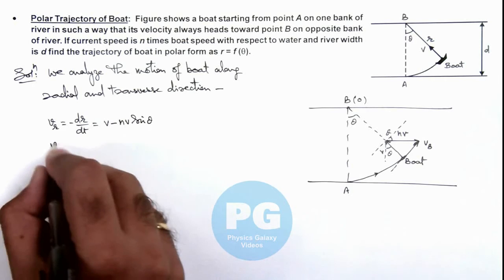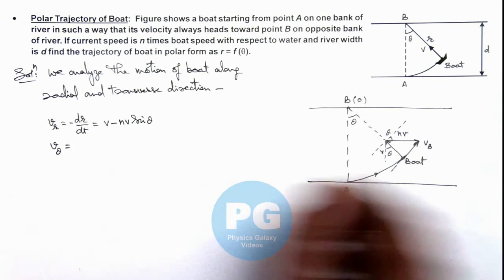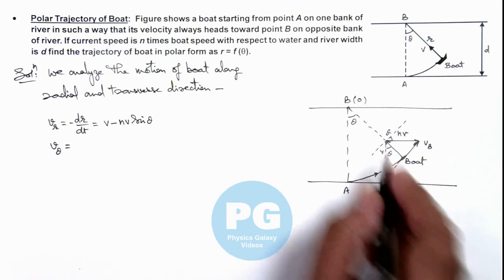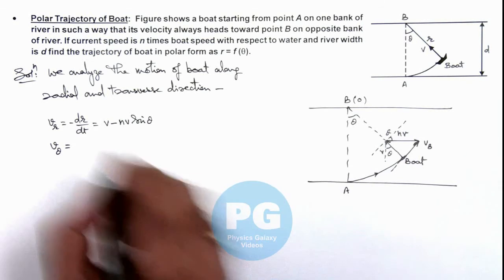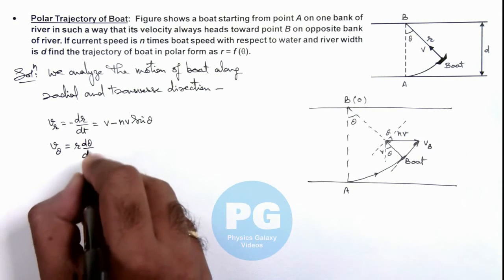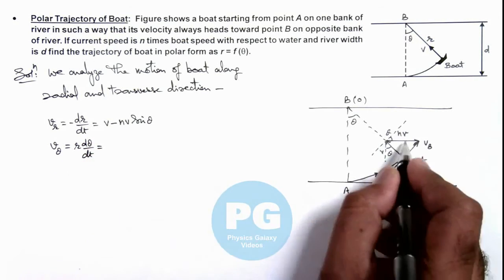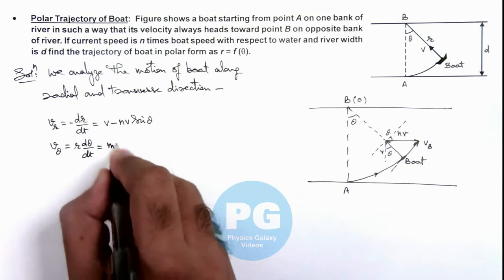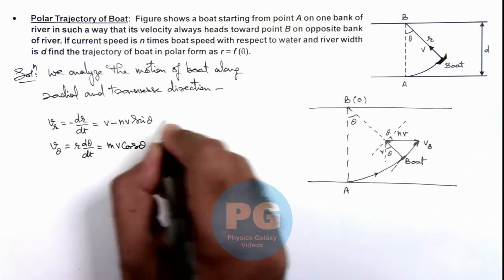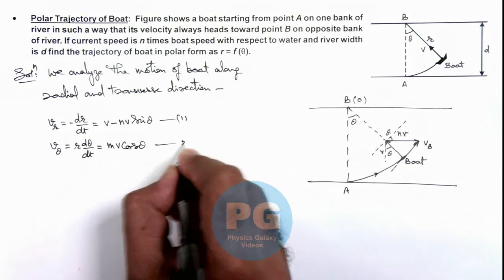And the transverse velocity v theta, that is along the line perpendicular to the position vector, we can write it as r d theta by dt and this is equal to only nv cosine theta. So if these are equations 1 and 2 for us.